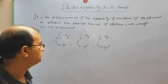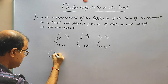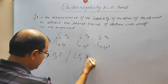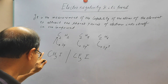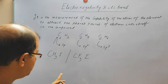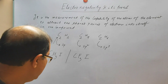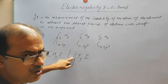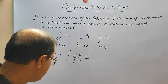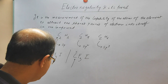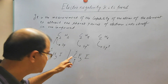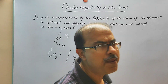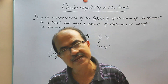So electronegativity is not fixed. Suppose two compounds are given: CH3I and CF3I. Will the electronegativity of carbon in these two compounds be the same? It will not. Because due to the higher electronegativity of fluorine, a higher amount of positive charge is developed on the carbon atom of CF3I compared to that in CH3I. So this carbon atom is much more electronegative than the other. In the compound itself, the electronegativity of the same element will differ.